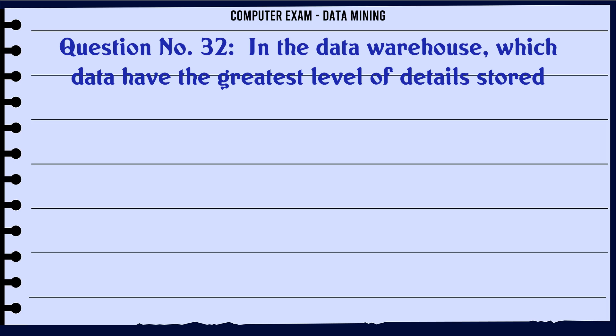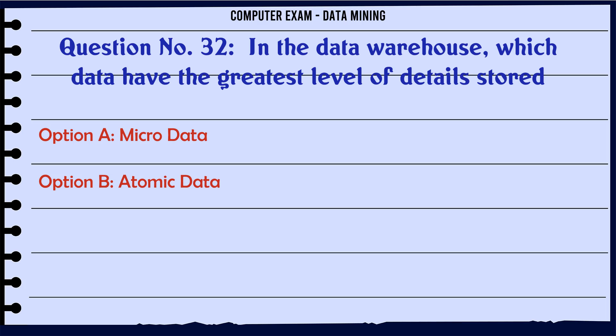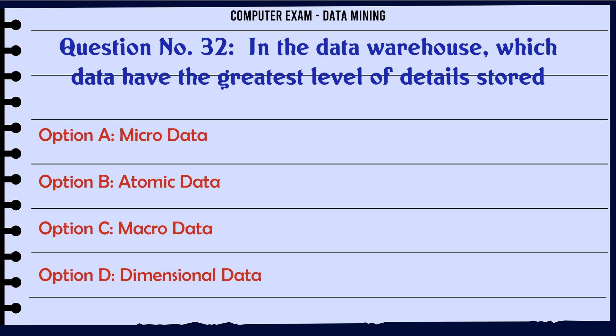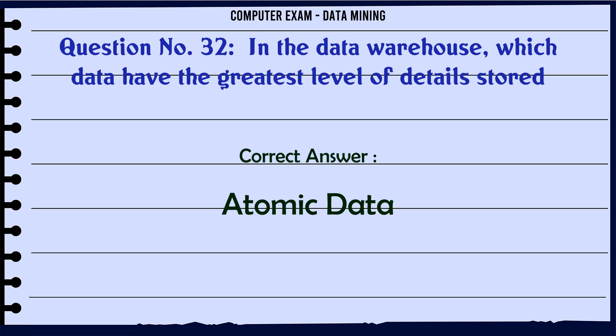In the data warehouse, which data have the greatest level of details stored? A. Microdata. B. Atomic data. C. Macrodata. D. Dimensional data. The correct answer is Atomic data.